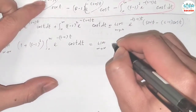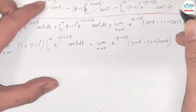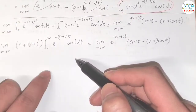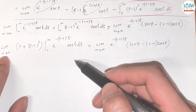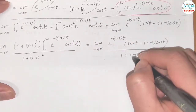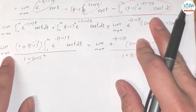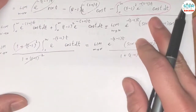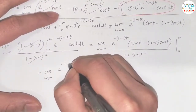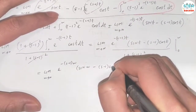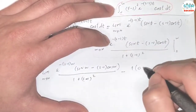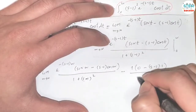Since we're integrating with respect to t, the (s-1)² factor is a constant and can be pulled out of the limit. So I divide both sides by 1 plus (s-1)². The right-hand side becomes: the limit as w goes to infinity of e^(-(s-1)w) times [sin(w) minus (s-1)·cos(w)], all over 1 plus (s-1)², minus plugging in t=0: sin(0) is 0, cos(0) is 1, so we get negative (s-1) over 1 plus (s-1)².